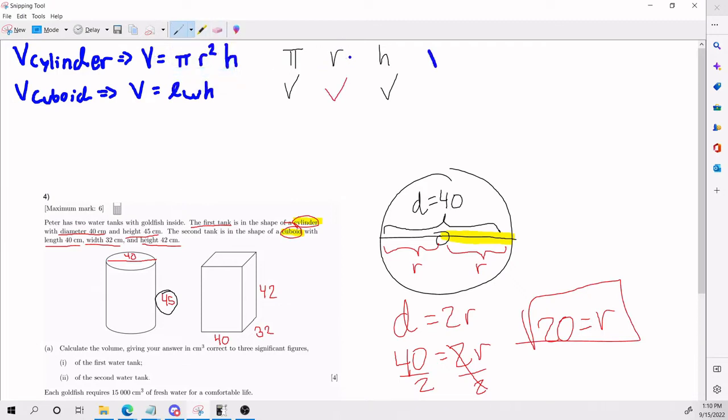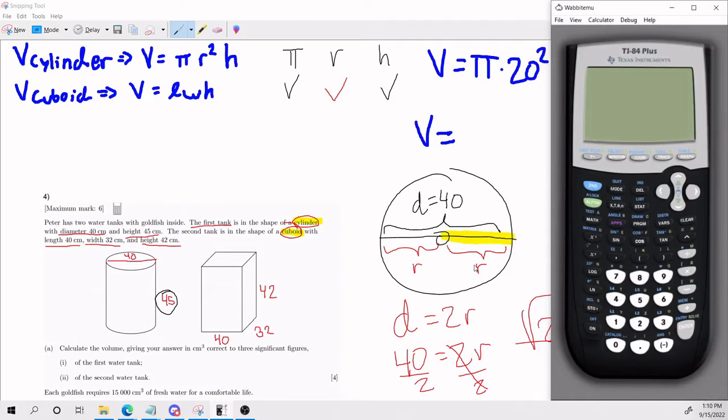Plugging into the formula, we have V equals pi times r squared, which is 20, times h, which we said was 45. Using our calculator, let's see what we get. Pi is under the bottom clear, times 20 squared, times 45. We get that.